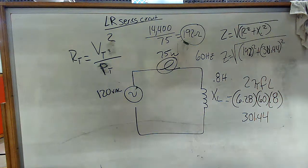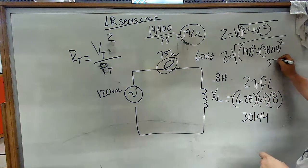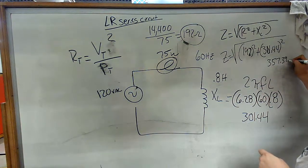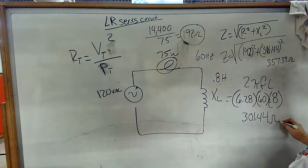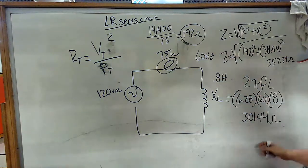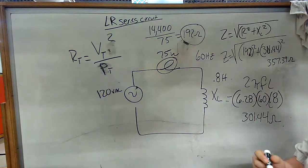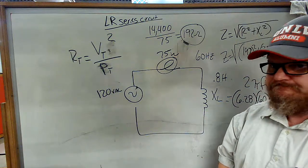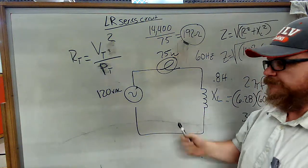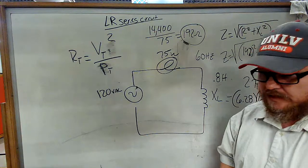And that answer will be 357.39 ohms. This is ohms, and that is ohms, and total impedance is in ohms. And that's the way it works for this one. I'm done.